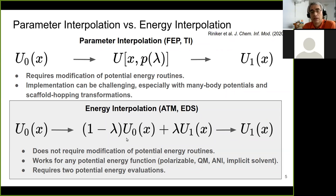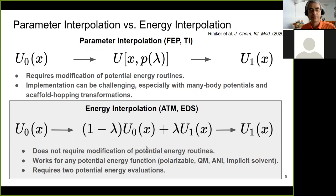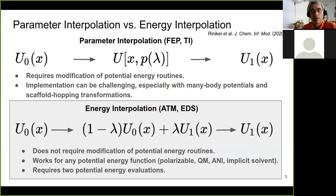You basically implement this outside the energy routines. That makes the method work with any potential energy function, including polarizable, quantum mechanical, machine learning potentials, and implicit solvent. The downside is that it requires two potential energy evaluations. I should also note that while I'm suggesting a linear interpolation in the schematics, it doesn't have to be linear — in fact, it rarely is. This was just a simple way to represent the energy interpolation idea as opposed to parameter interpolation.